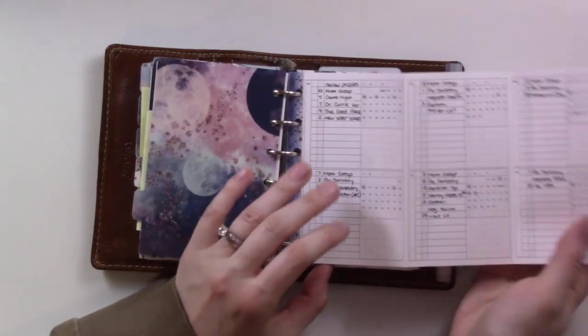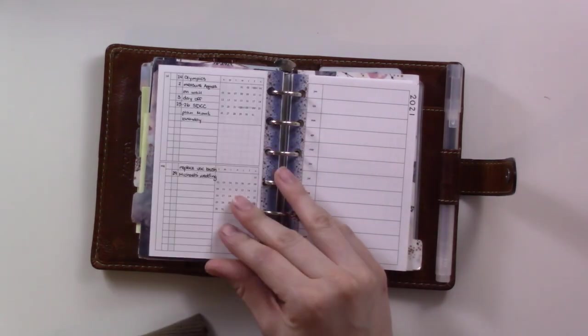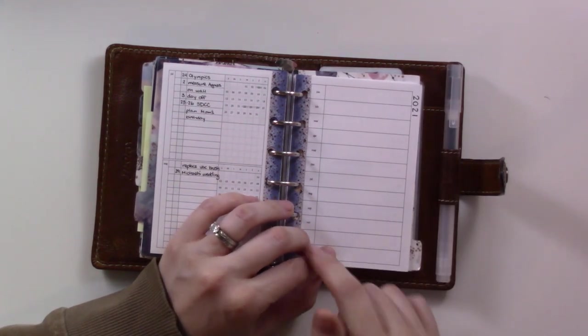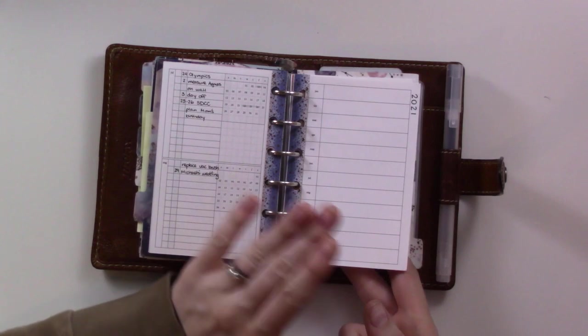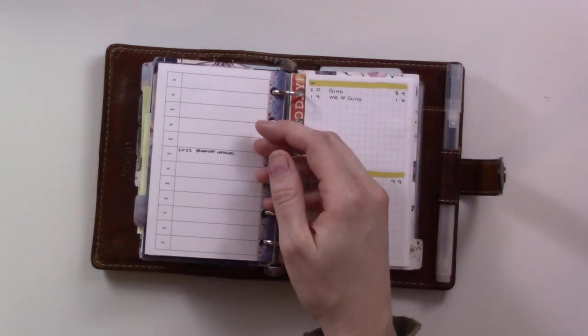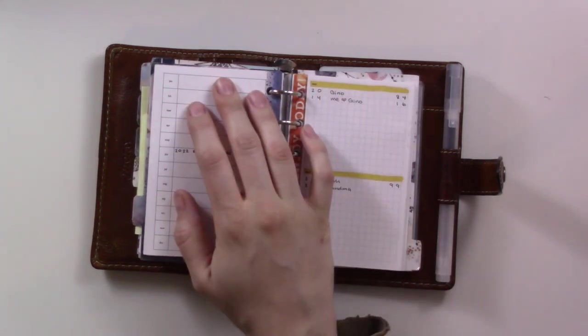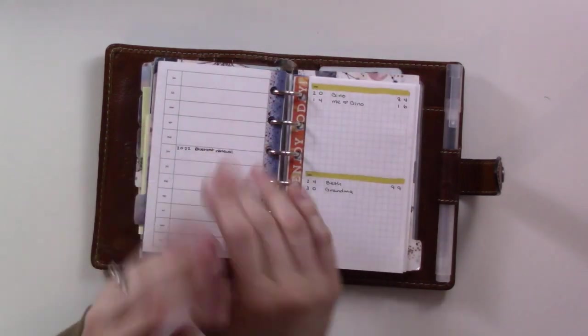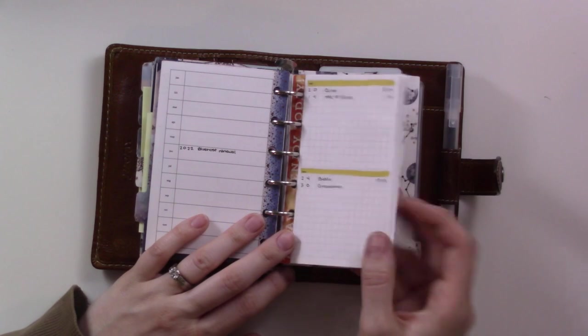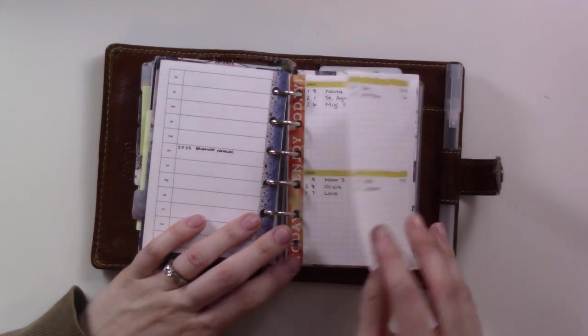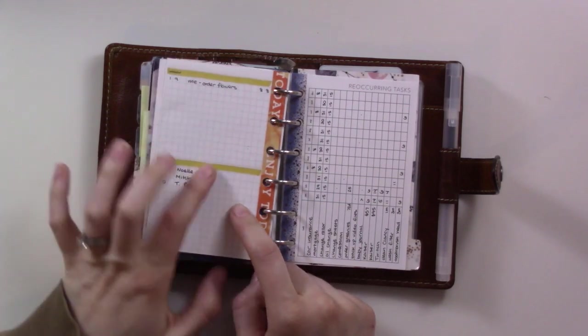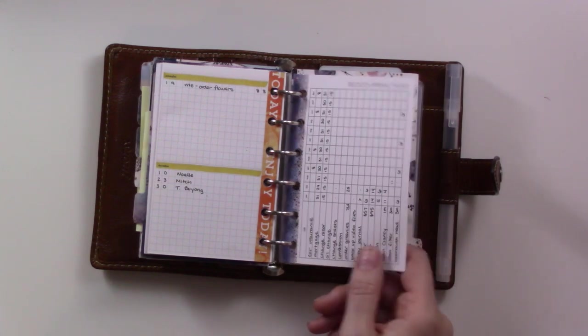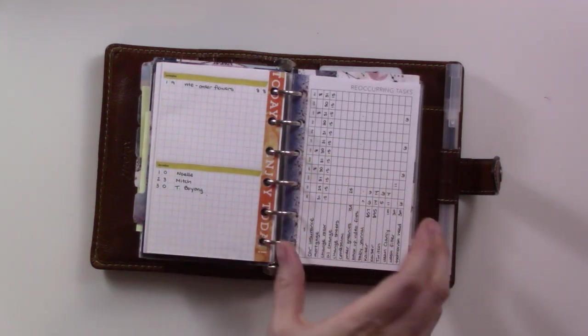This next section is my future log. This is the Peanuts Planner Co yearly bundle fold-out. I used this all last year, it worked great so it's the same this year. Then this one is 2021 and beyond, so anything that happens for next year that comes up I can add it. This is for beyond that so anything that happens in 2022 and beyond can go here. This is just an evergreen insert that's got all of my birthdays and anniversaries. I take a look at that every month as well. This is the recurring tasks list which I pull out once a month when I do my monthly planning.